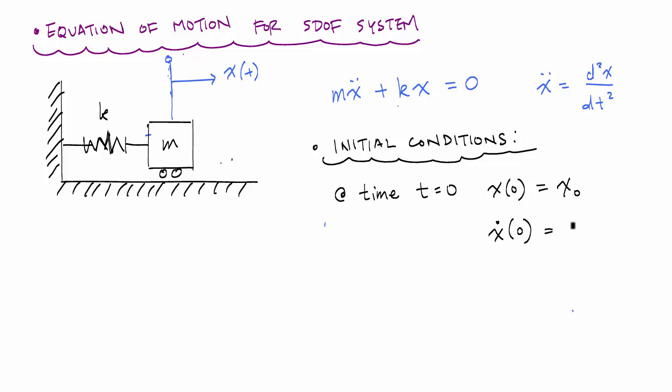For initial velocity, x dot at 0, I'm going to give it a push. This will be x dot of 0. This is like the pull and this is the push.